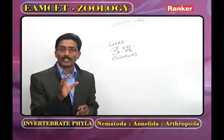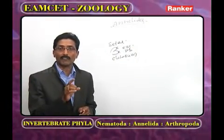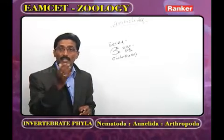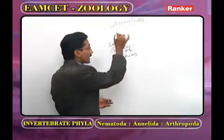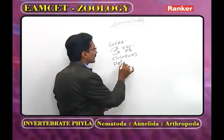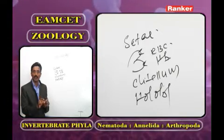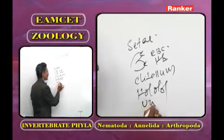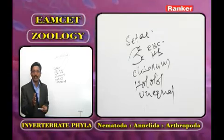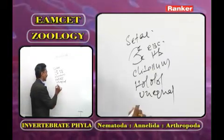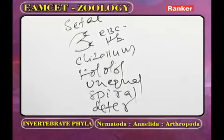Polychaeta is the only unisexual group. In the majority of annelids, development is direct — larvae are absent. In Polychaeta, development is indirect and produces a trochophore larva. The cleavage in Annelida is holoblastic and unequal — producing macromeres and micromeres. The cleavage is also spiral and determinate, meaning the fate of each blastomere is known earlier.